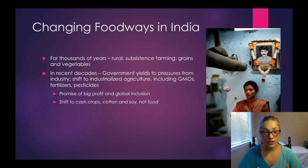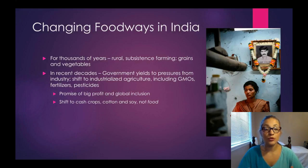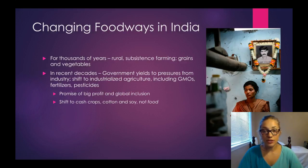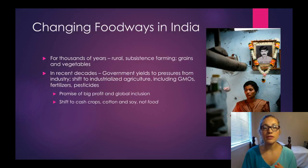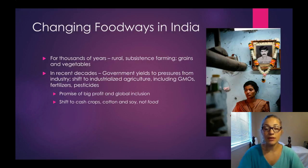Part of this shift includes a shift to cash crops — things like cotton and soy, which we can't actually eat. Instead, you produce them to sell, and theoretically you use that money to purchase food. Ideally, you'd have a surplus from those cash crops to purchase food and other things you might need, but it's a big shift in how people are farming and thinking about money.